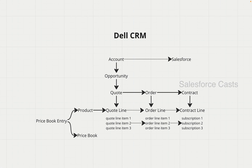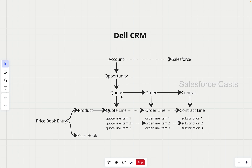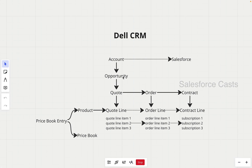It is a pretty common practice to have multiple quotes for a single opportunity. Initially a quote will be created, then the customer is going to push for some more discount. Dell is going to apply, let's say, 5% discount. Then Salesforce is going to push hard for some more discount, and Dell is going to apply 15% discount. For each of these versions, a quote record will be created. So it is a common practice to have multiple quote records for a single opportunity or deal.